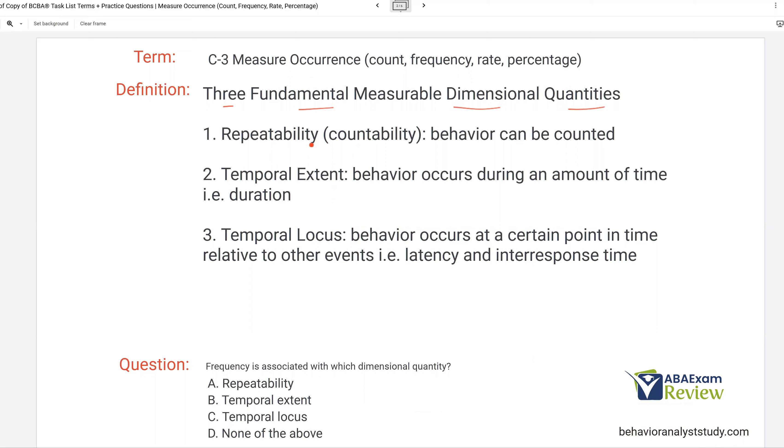So we have repeatability, which is just countability. So this is like our frequency or count. We've got temporal extent where behavior occurs during an amount of time. In other words, the duration of behavior. And then temporal locus, so behaviors occur at a certain point in time relative to other events. This would be your latency and inter-response time. Now, in practice, you're going to be using the specific measurement types as you design your plans. But as a BCBA and an analyst and for your exam especially, you've got to know what are they derived from, and they're derived from these three measurable dimensional quantities.